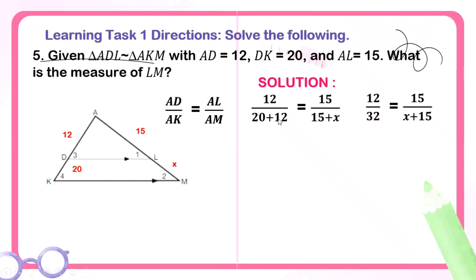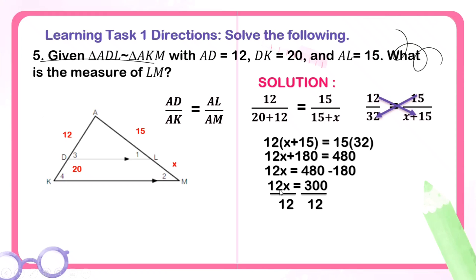Let's substitute their values. AD is 12 over 20 plus 12. Why 20 plus 12? Because this is AK. AK, the total measurement of this. If AD is 12, and DK is 20, add them to get AK. So, 20 plus 12 equals 15 over, on this side, AM, add 15 and x. Cross multiply. 20 plus 12 is 32. 12 times the quantity of x plus 15 equals 15 times 32. 12 times x is 12x. 12 times 15 is 180. Equals 15 times 32 is 480. Move 180 to the other side. We have 12x equals 300. Divide both sides by 12 to get the value of x. Therefore, x equals 25 because 300 divided by 12. So LM, or the measurement of segment LM, is 25.